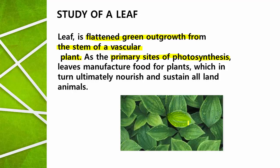Therefore photosynthesis is the primary function of all leaves, and hence leaves are called the primary sites of photosynthesis, where leaves manufacture the food for plants. The plants prepare food for their own existence.